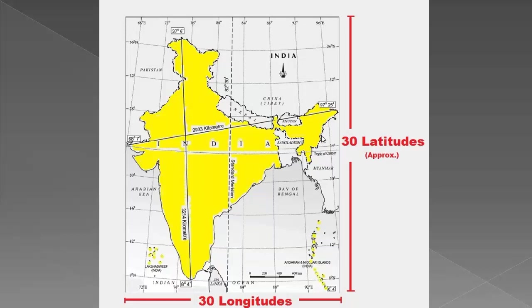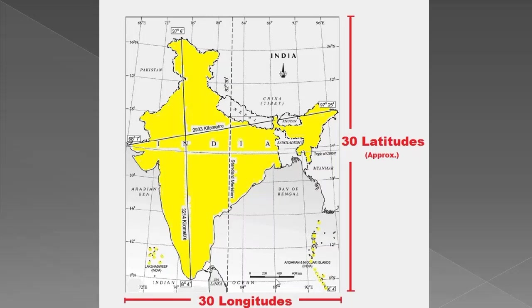Look at the map. The latitudinal extent of India is 8 degrees 4 minutes north to 37 degrees 6 minutes north — about 30 latitudes. The longitudinal extent of India is about 68 degrees 7 minutes east to 97 degrees 25 minutes east — also about 30 longitudes. That means 30 longitudes and 30 latitudes are passing through India, but the north-south extent appears bigger than the east-west extent.